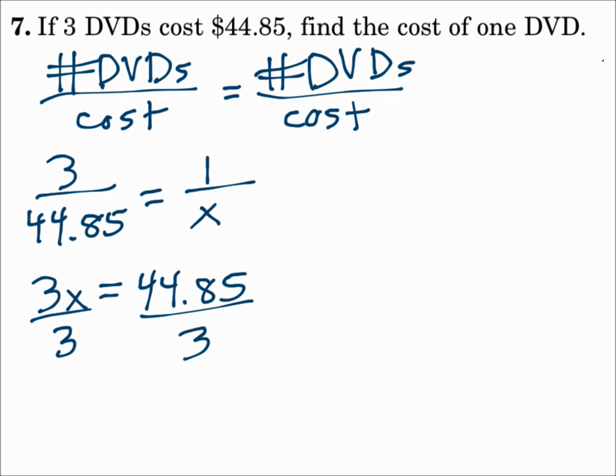Divide both sides by 3. And x is $14.95. Organize the proportion and solve by cross multiplying.